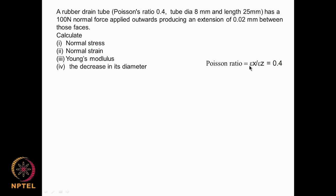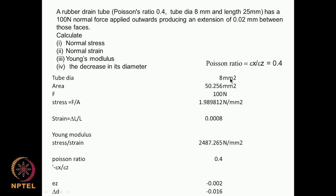Poisson's ratio is minus epsilon_x divided by epsilon_z, given as 0.4. Now, let us calculate normal stress — that is simply force divided by area. Normal strain is increase in length divided by original length. Young's modulus is the ratio of stress to strain. The tube diameter is 8 mm, so area is π·d²/4 = 50.2 mm². Force is 100 Newton, so stress is 100 divided by 50.2, giving approximately 1.9 Newton per millimeter squared.